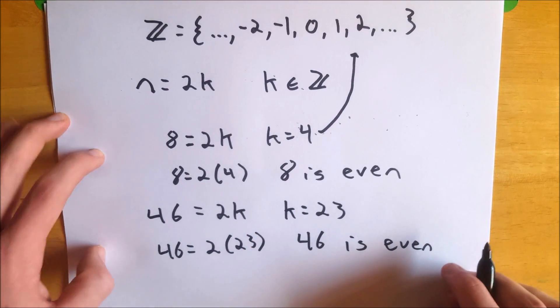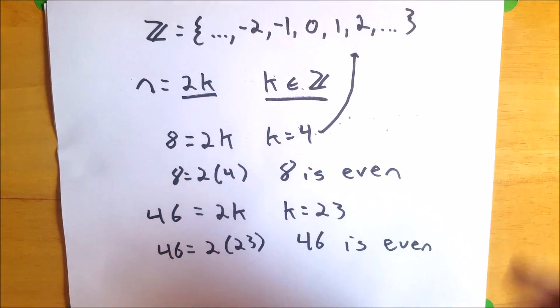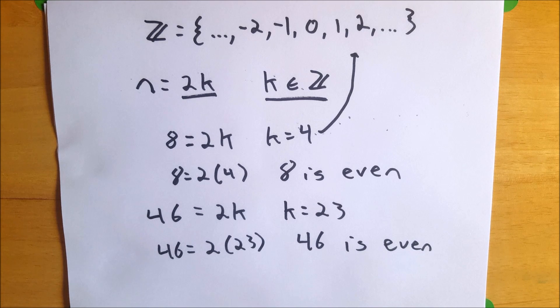So if you can prove that a number equals 2k for some k that's an element of ℤ, then you have proved that that number is even.